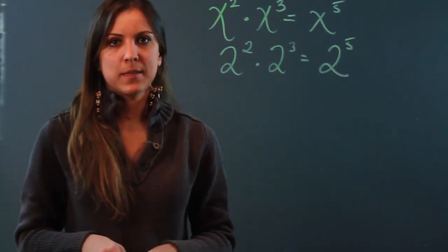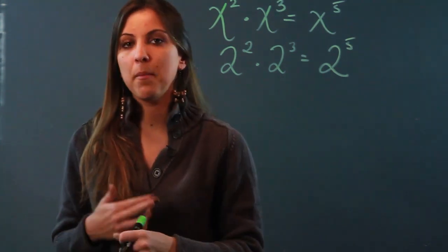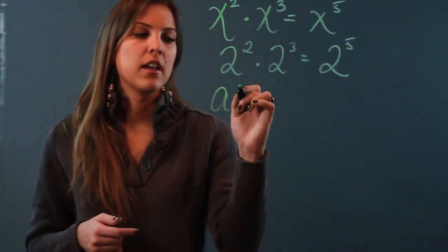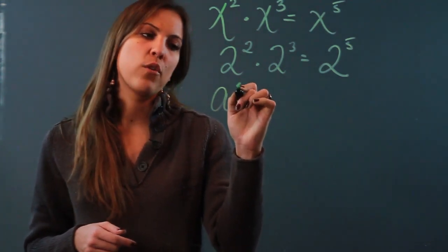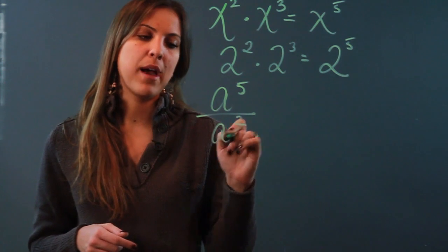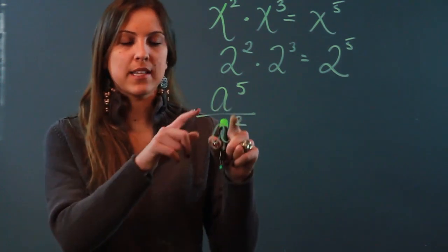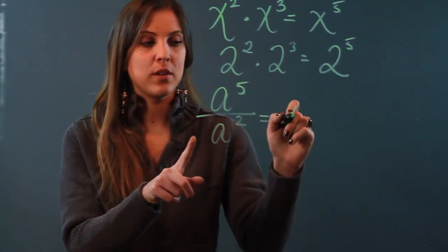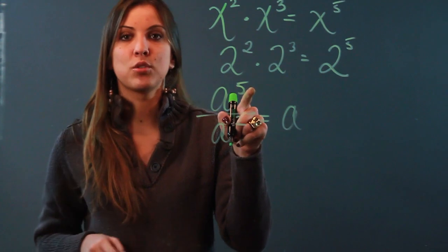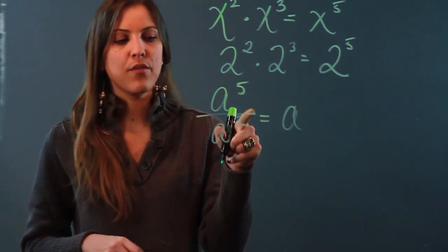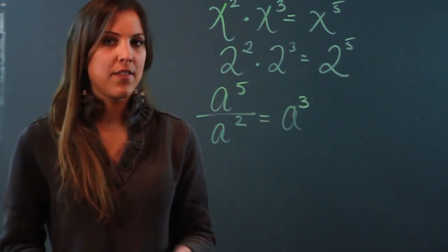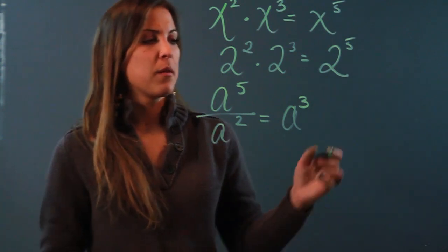Now our division law of exponents says that if the bases are the same — so if I had a to the fifth power over a to the second power — my bases are the same, so I'm going to keep my base and subtract my exponents. Five minus two is three.